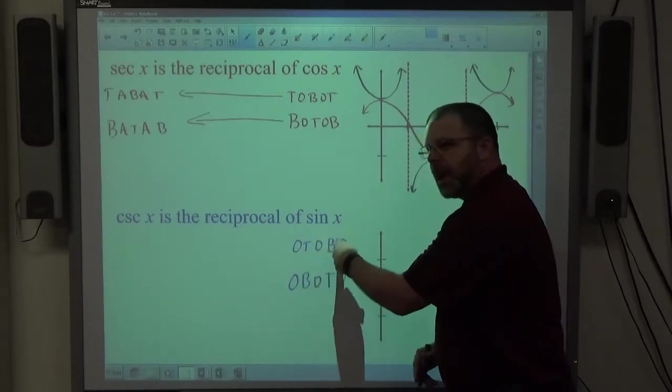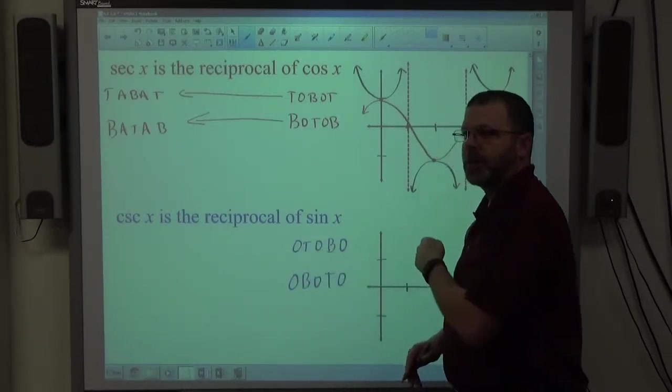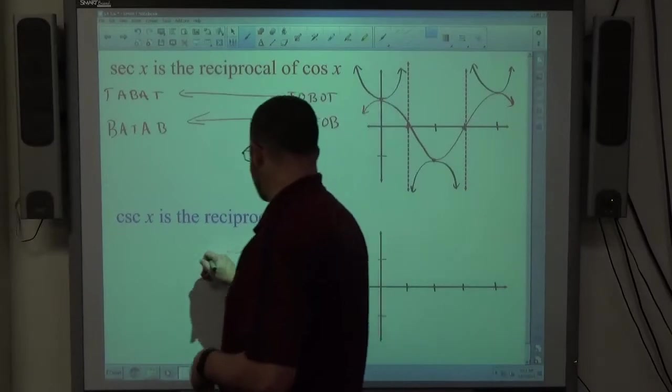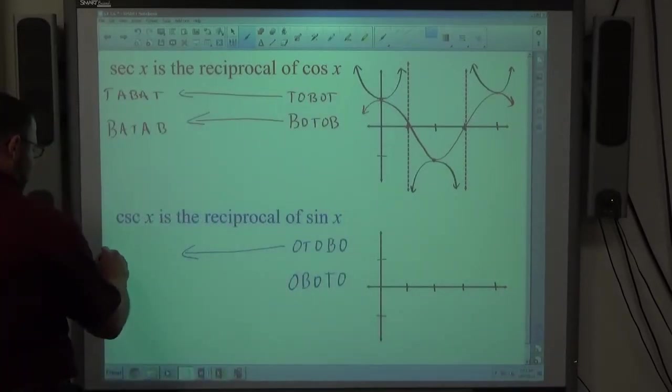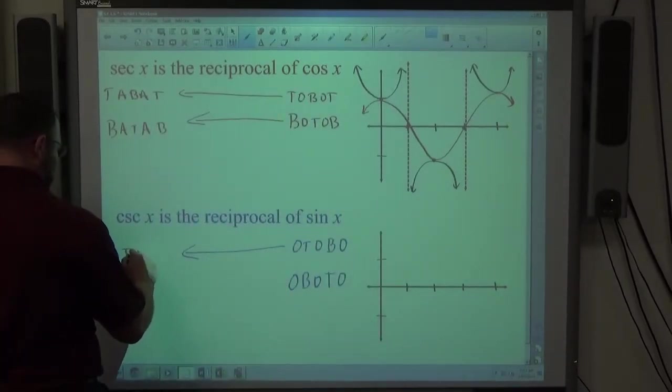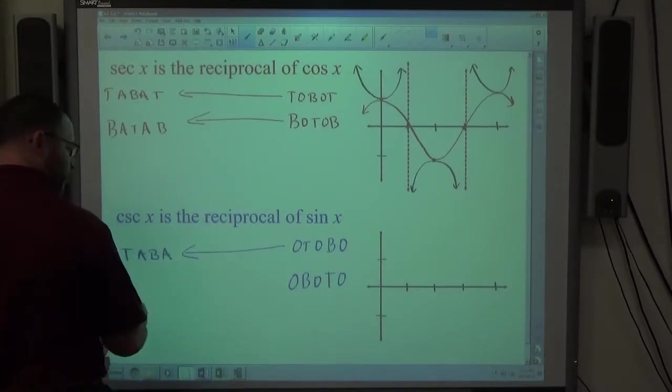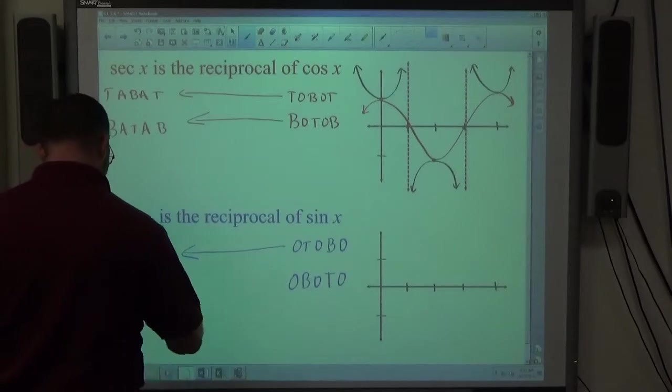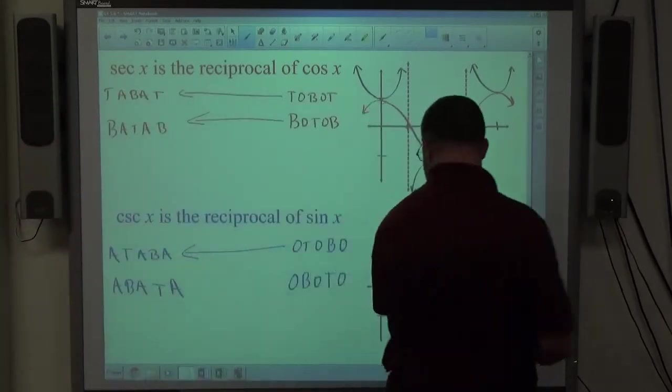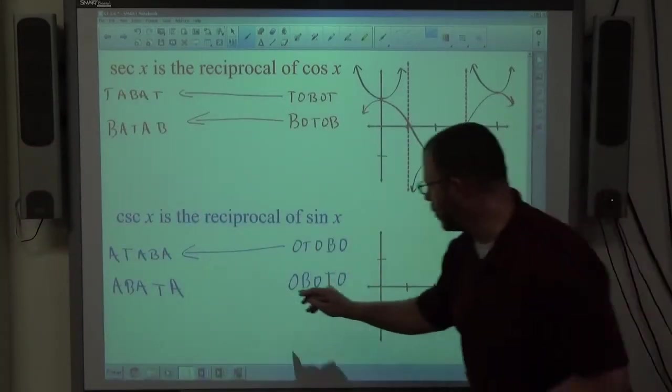Again reciprocal of zero is going to be an asymptote, the tops and bottoms are the same tops and bottoms. So for cosecant, if we're going to start at an asymptote, top, back to the asymptote, bottom, back to asymptote. Asymptote, bottom, so a taba or a bata, instead of otobo and a boto.